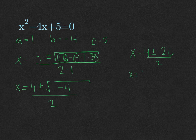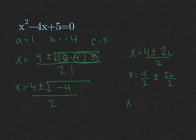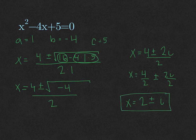If we divide 2 into each of those numbers, we get 4 over 2, plus or minus 2i over 2, and the last simplification would be 2 plus or minus i. And that is our final answer.